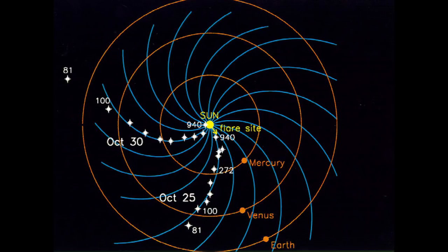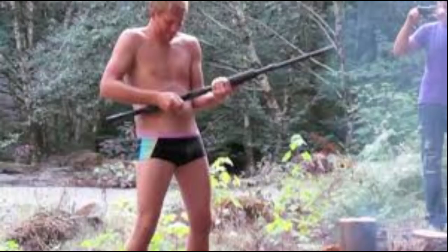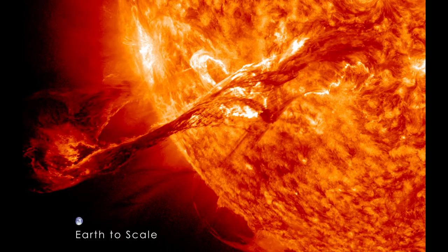For a CME to hit the earth, it actually has to be facing away from us — which sounds strange — but the particles make a spiral effect around the sun, so if the eruption is pointed directly at us we're safe. It's good to think of the sun as being like a drunken man spinning around in the middle of a room full of people, firing the trigger of a shotgun completely at random. We've been very lucky recently — there have been a few major flares in the last few years, and we've been fortunate that they were facing in such a direction that the earth was not actually hit.